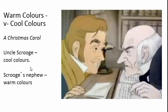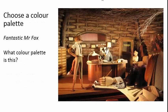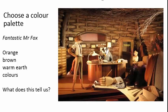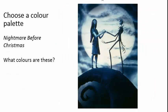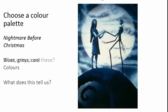Here's another example from A Christmas Carol. Uncle Scrooge is cool, bloodless, cold, calculating; his nephew is warm, generous, full of life and vigor. Fantastic Mr. Fox is an entirely orange-palleted film — even the sky is orange because foxes are red, so that informs the whole movie with warm brown earth colors. Contrast that with Nightmare Before Christmas, where the characters are all bloodless — literally dead — and all the colors have been drained out of them, leaving blues and grays and cold colors.